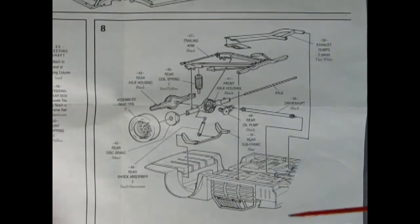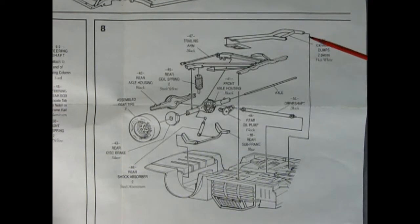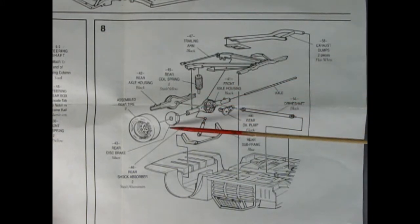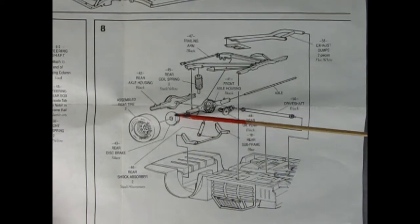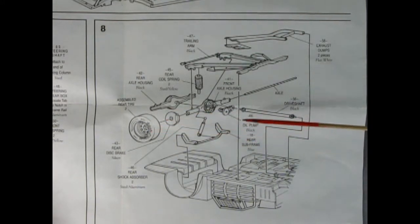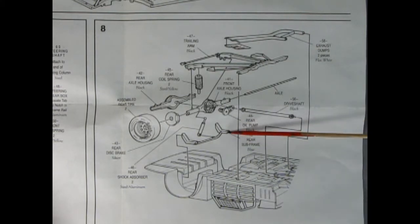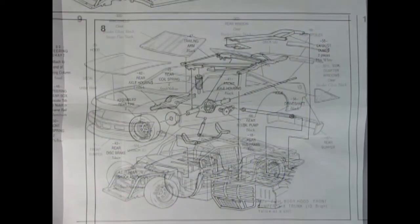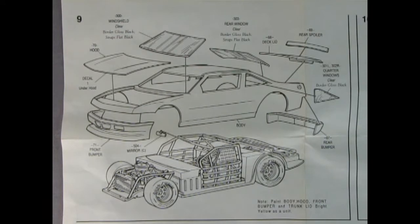Panel 8 sure looks great. We've got our exhaust dumps here in two pieces. You paint those flat white. We've got our trailing arms, our rear coil springs. Our rear axle housing in two pieces. There's a metal axle that will go right through. You've also got disc brakes on the back, and then your assembled tire. And down here we've got a little rear subframe, shock absorbers, the oil pump, and our drive shaft as well.